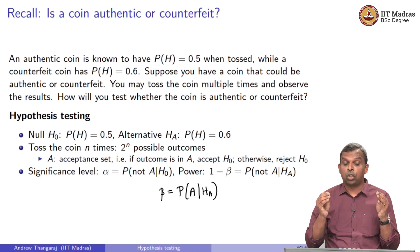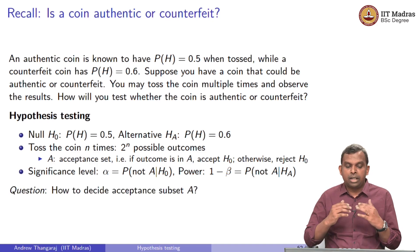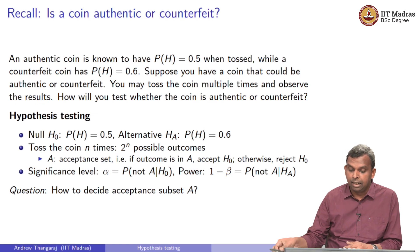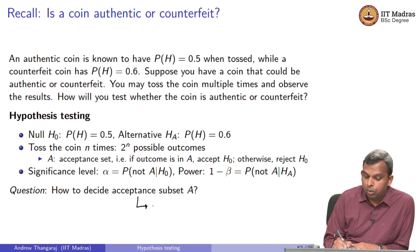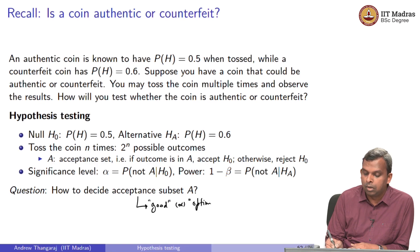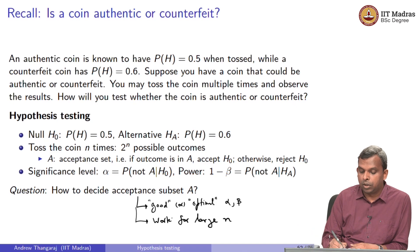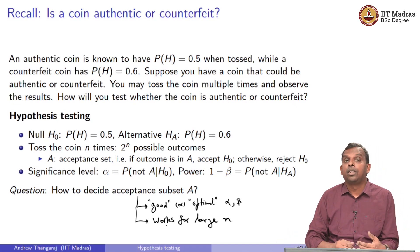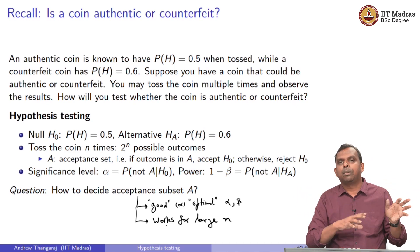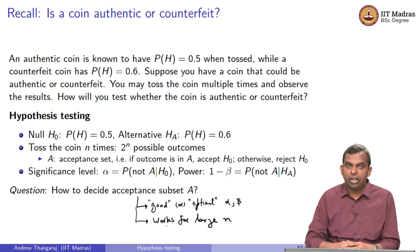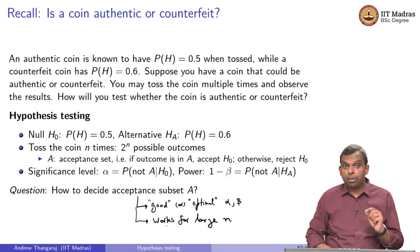When we tossed the coin just three times, we could understand the trade-off clearly. The important question is how to decide the acceptance subset A that provides an optimal alpha-beta trade-off and also works for large n. If n is 100, you have 2^100 possibilities — you cannot write down all of them. It has to be something very simple. It turns out the likelihood ratio test gives you the answer to this question — it is optimal in some sense and gives very simple answers even for really large n.